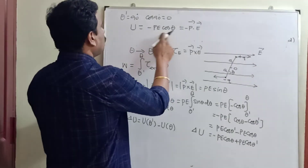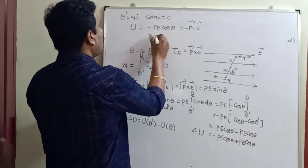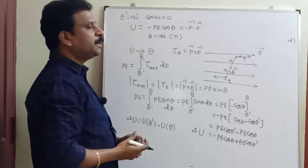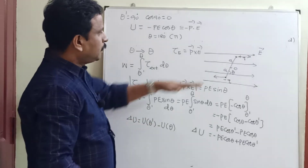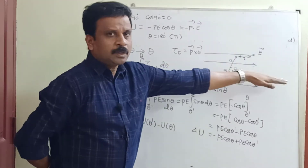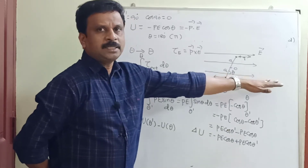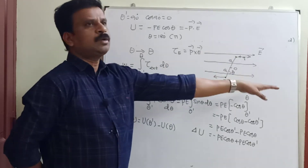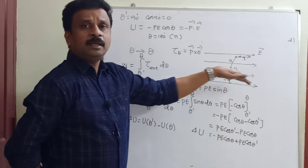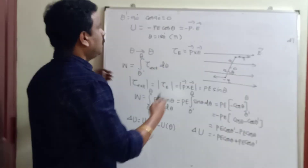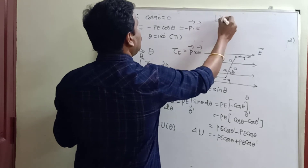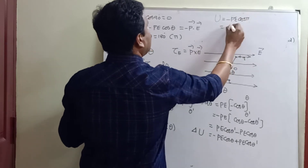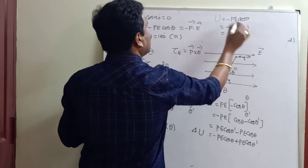Now for maximum or minimum energy: when theta is 180 degrees — that is, pi — the dipole moment vector is anti-parallel to the electric field. So U equals minus pE cos pi. Since cos pi equals minus 1, U equals plus pE. This is the maximum value of the electrostatic potential energy.